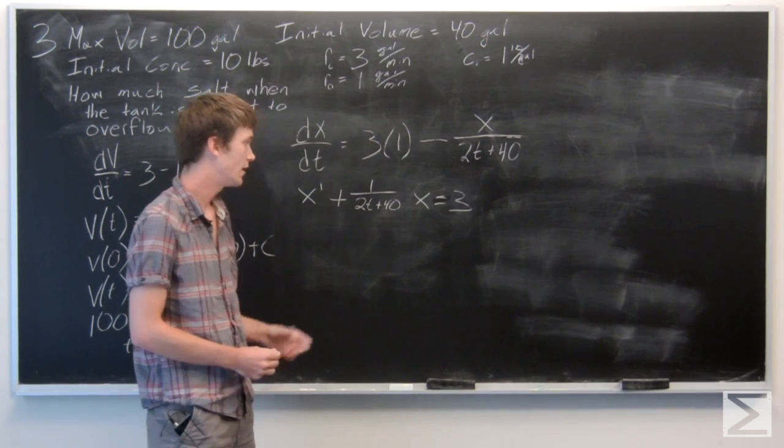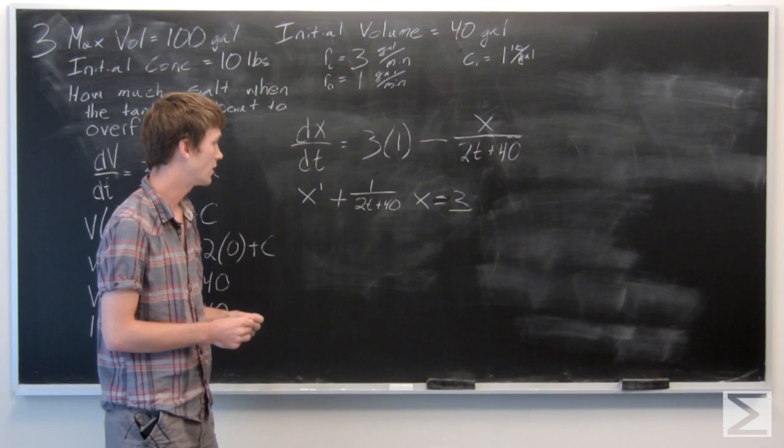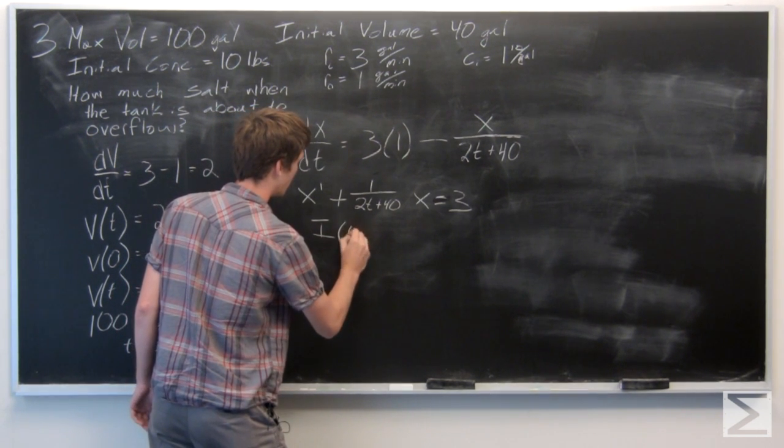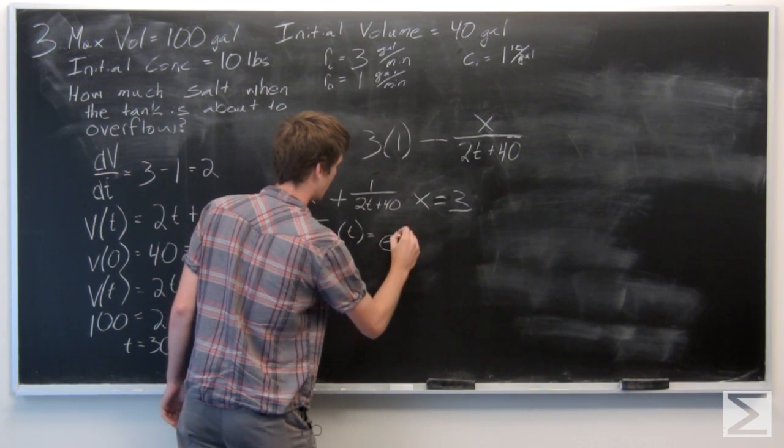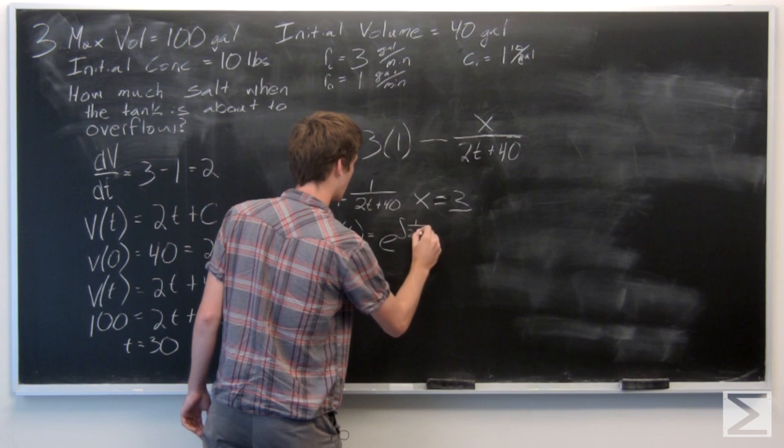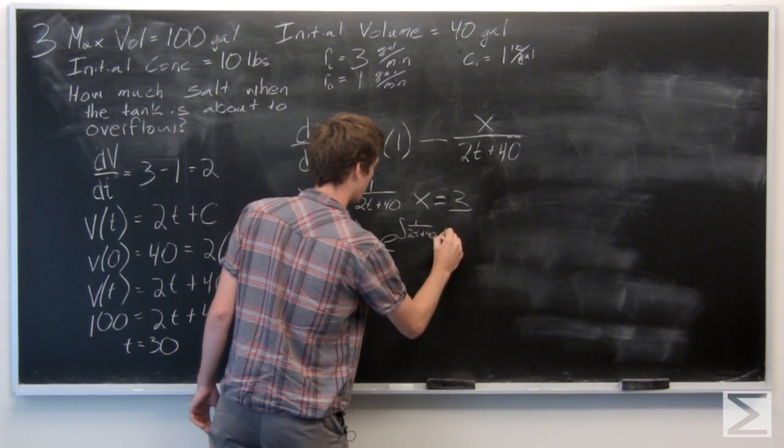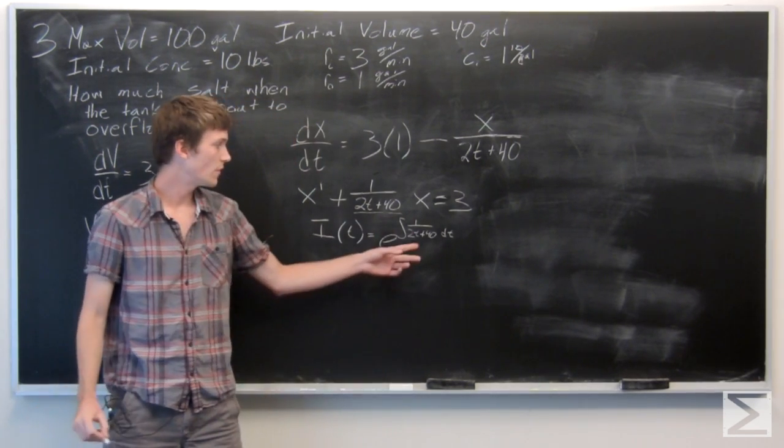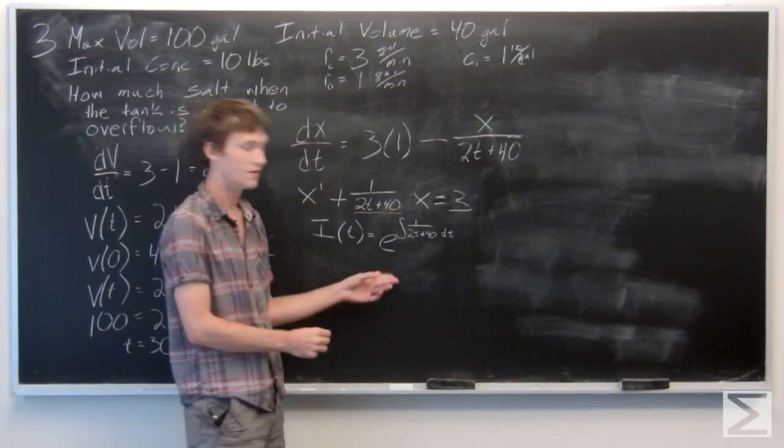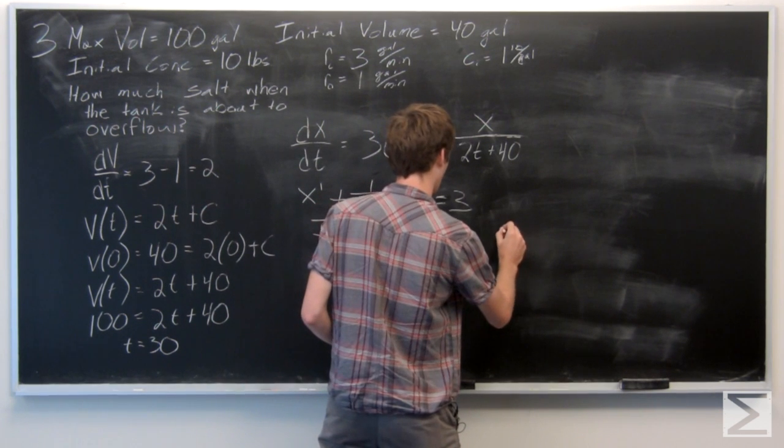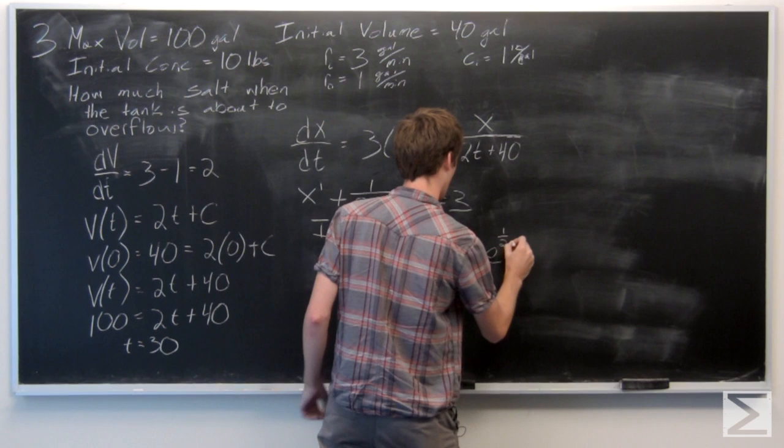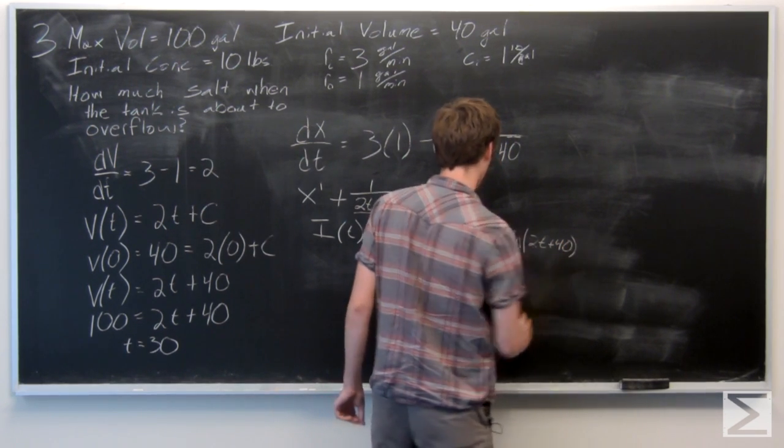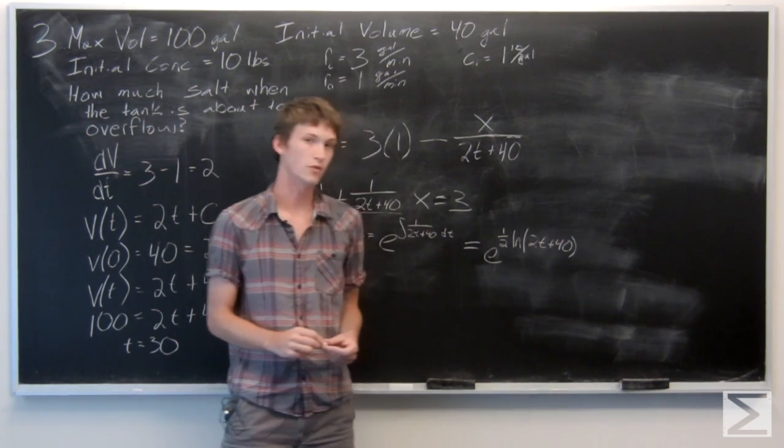So we're going to find the integrating factor and then use the chain rule as applied to that. And we'll figure out what our x of t is. And we know that the integrating factor is e to the integral of this p of t term. So we can solve this. And we get e to the 1 half natural log 2t plus 40.